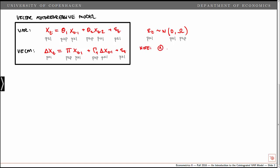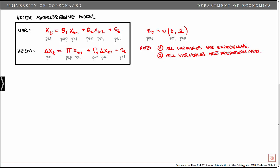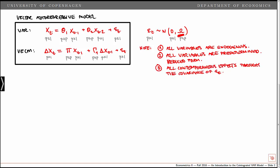Note three things. First, all variables are endogenous. In a single equation approach we were building a model for yt given x and z, but here all the variables in the vector xt are endogenous. Second, all variables are predetermined — we are working with a model in reduced form, and the VAR model is a model for xt given the joint past of xt. Finally, all the contemporaneous effects are modeled through the covariance matrix omega, because we allow the shocks at every point in time to have a non-zero covariance.